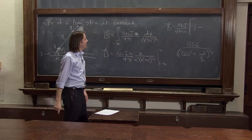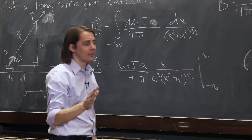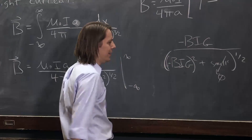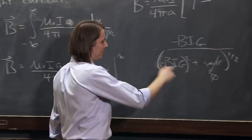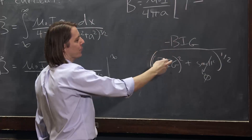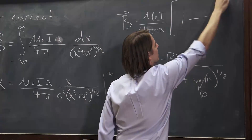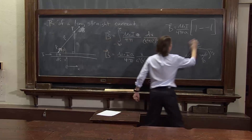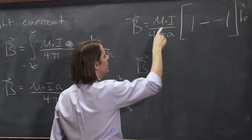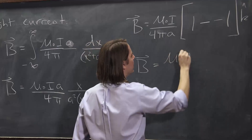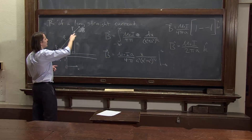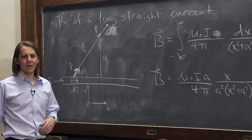Now we plug in minus infinity. You might think it's going to give us 1 minus 1, but it won't. If we plug in minus infinity, it's minus big, and the denominator is minus big squared plus small, to the 1 half. Minus big squared is something really big, so the small goes away. The denominator remains positive, but the numerator was negative — so you get minus big over big, which is minus 1. So it's 1 minus minus 1, which is 1 plus 1, giving a factor of 2. That knocks the 4 down to a 2, and you get B equals mu-naught I over 2 pi A in the k-hat direction. So that's the B field once we add up all these dB contributions.